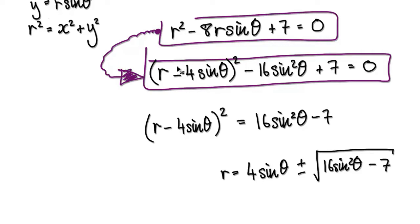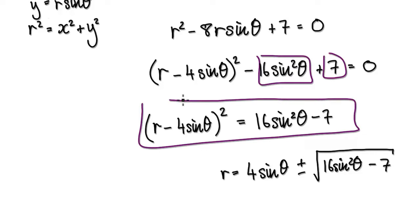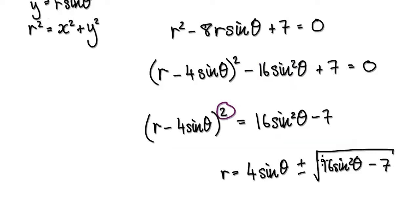We are currently here, so rearrange this to make r the subject. Add this and take away this, which gives us this. Then square root both sides.